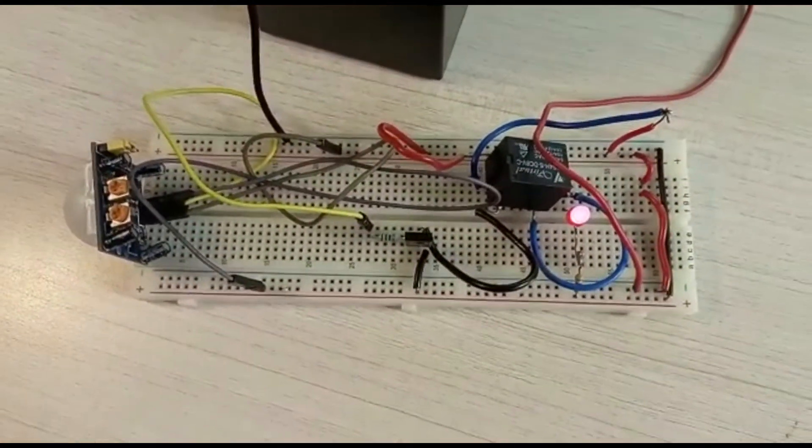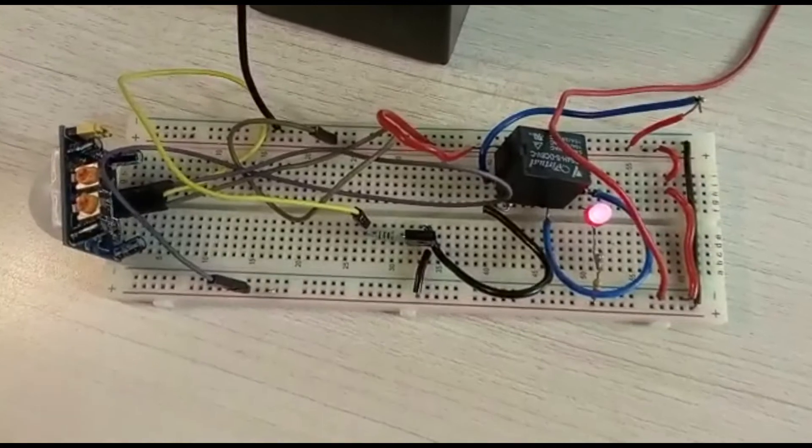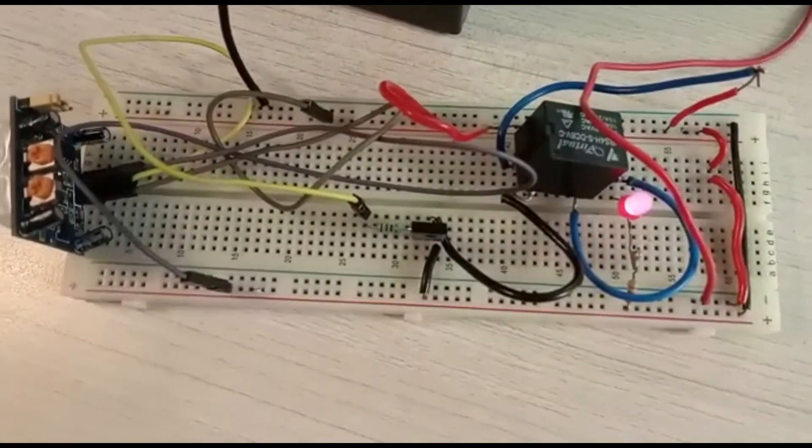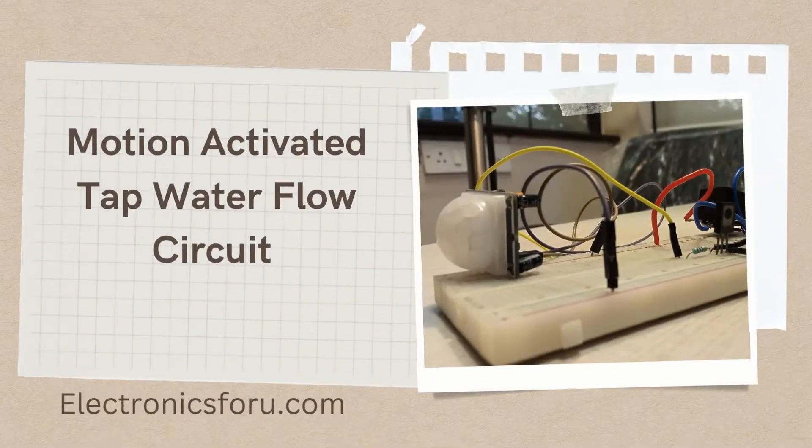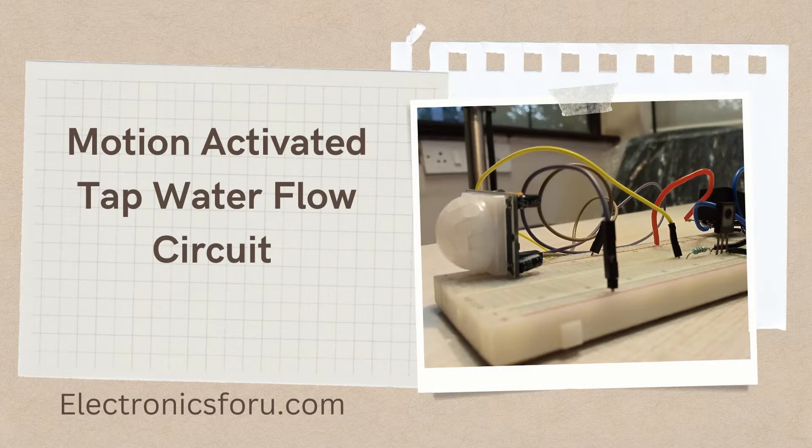Welcome to electronics4u.com DIY project videos. This video is a proof of concept of the DIY project motion activated tap water flow circuit which is published on electronics4u.com.